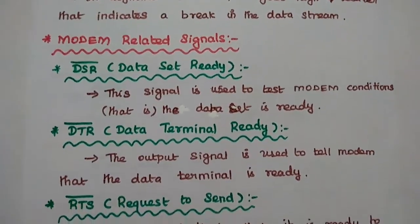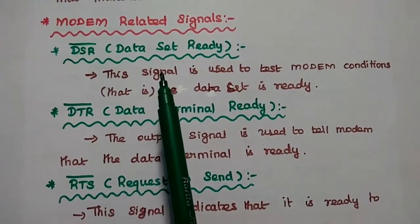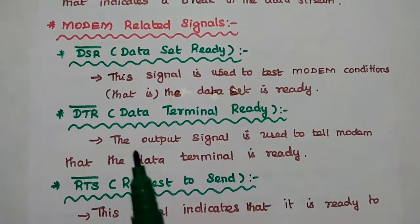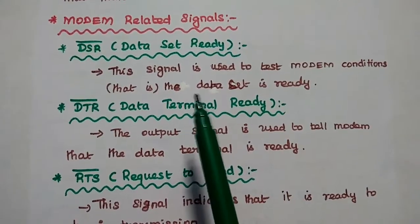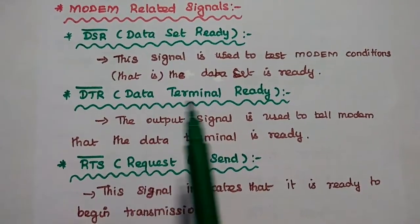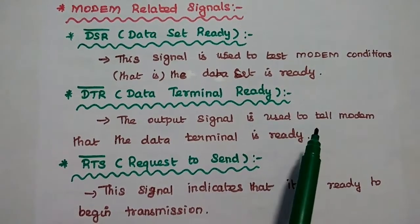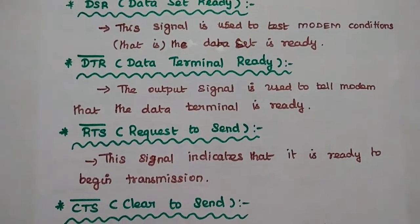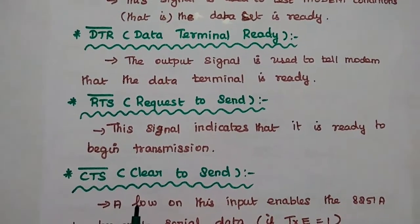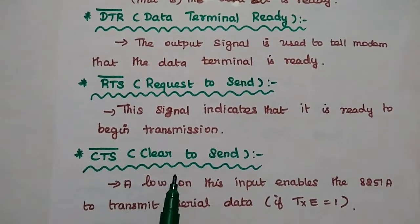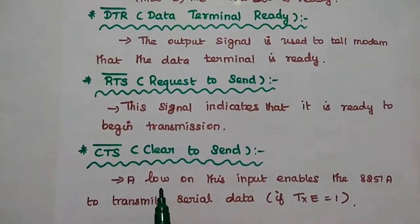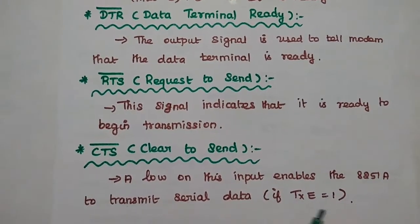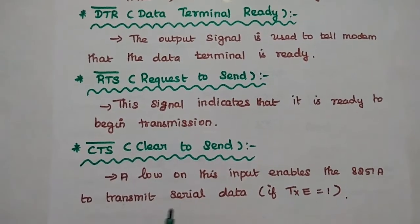There are four modem-related signals. DSR (data set ready) is used to test modem conditions indicating the data set is ready. DTR (data terminal ready) is an output signal used to tell the modem that the data terminal is ready to transmit and receive. RTS (request to send) indicates that the device is ready to begin transmission. CTS (clear to send) is an active low signal — when low, it enables the USART to transmit serial data, with the condition that the transmitter is empty.